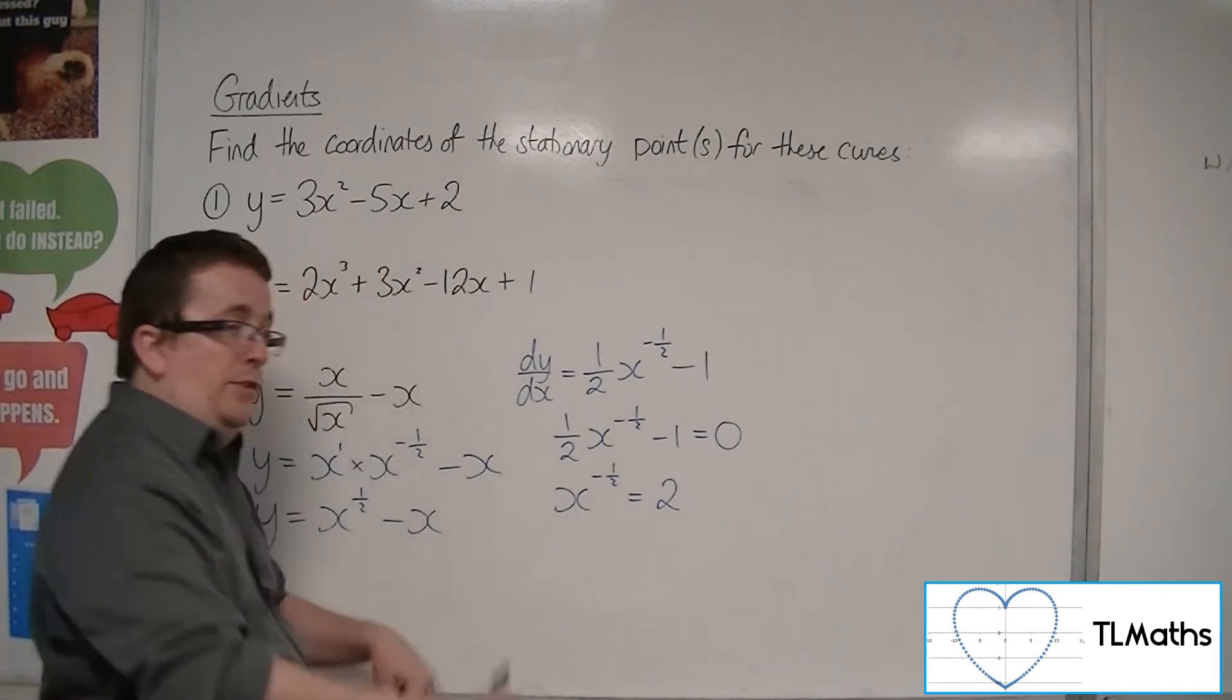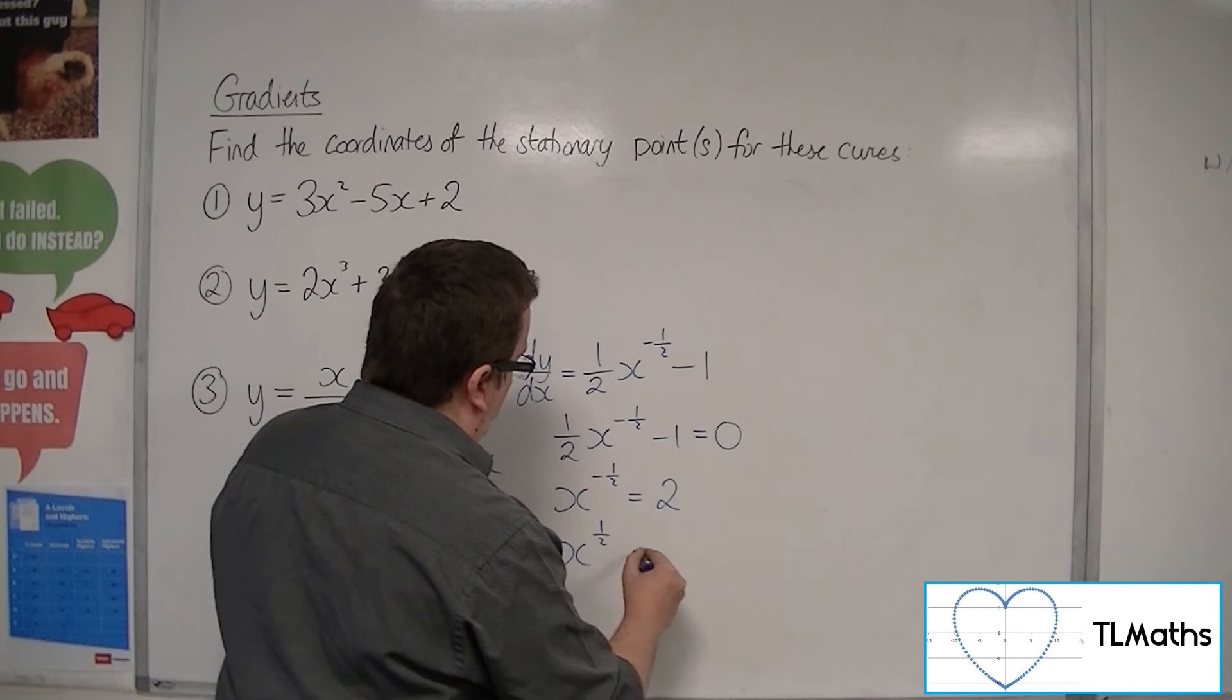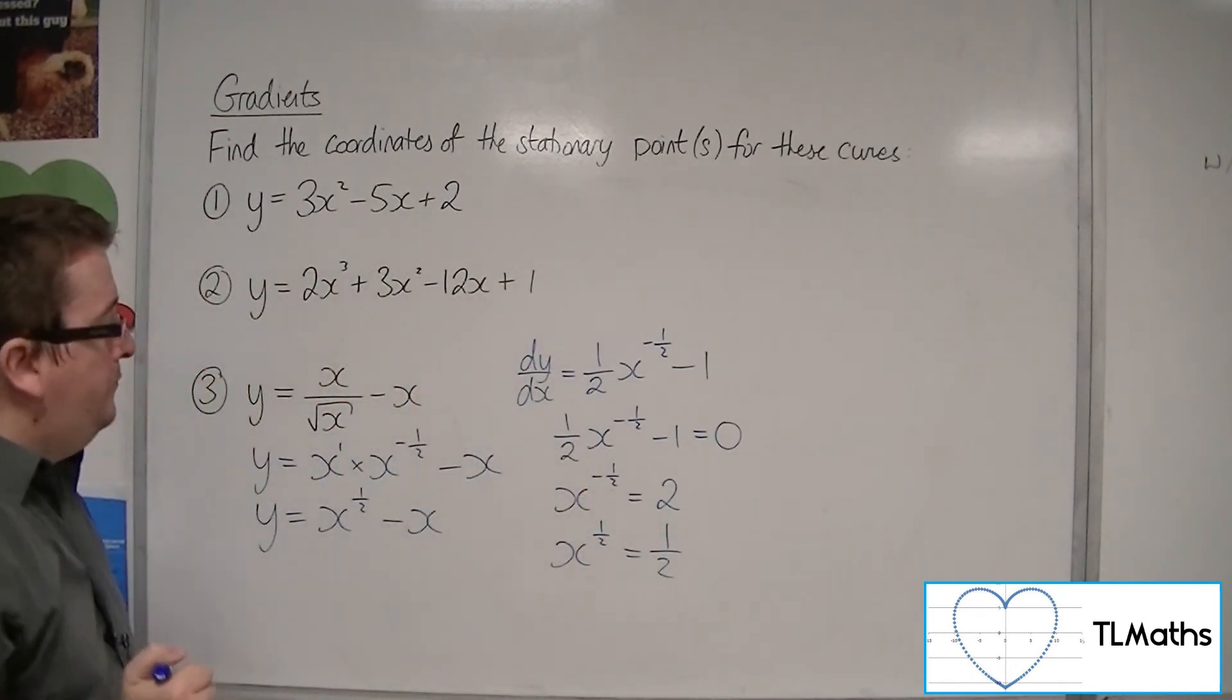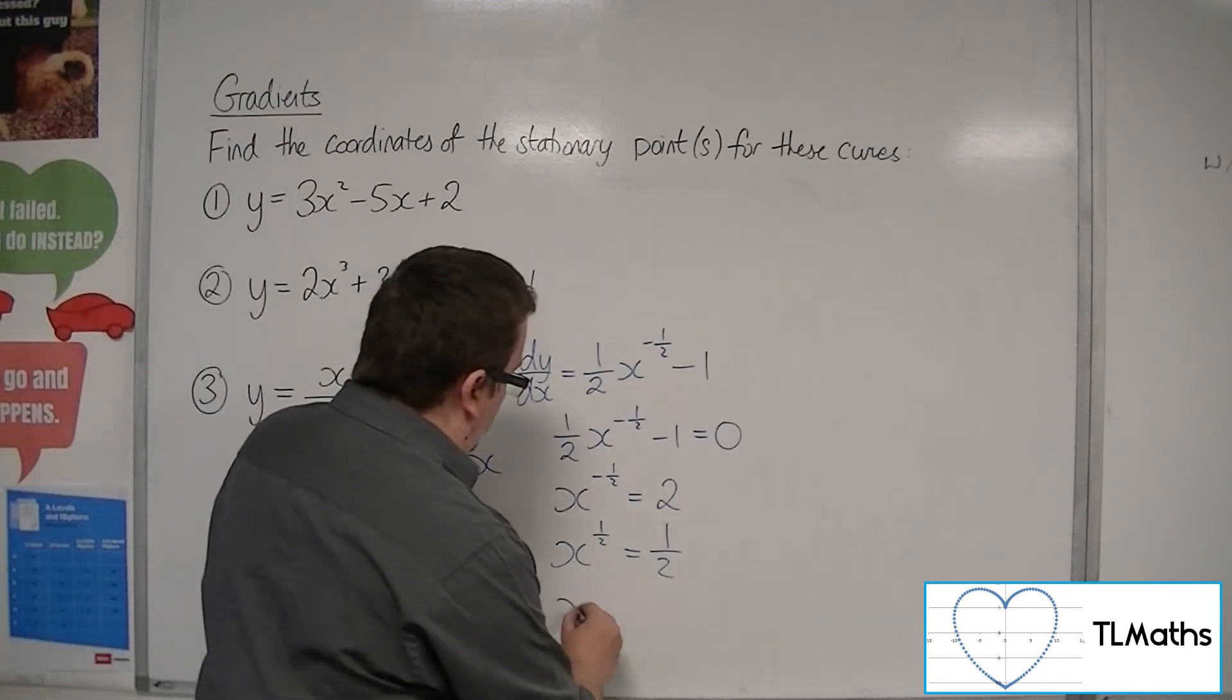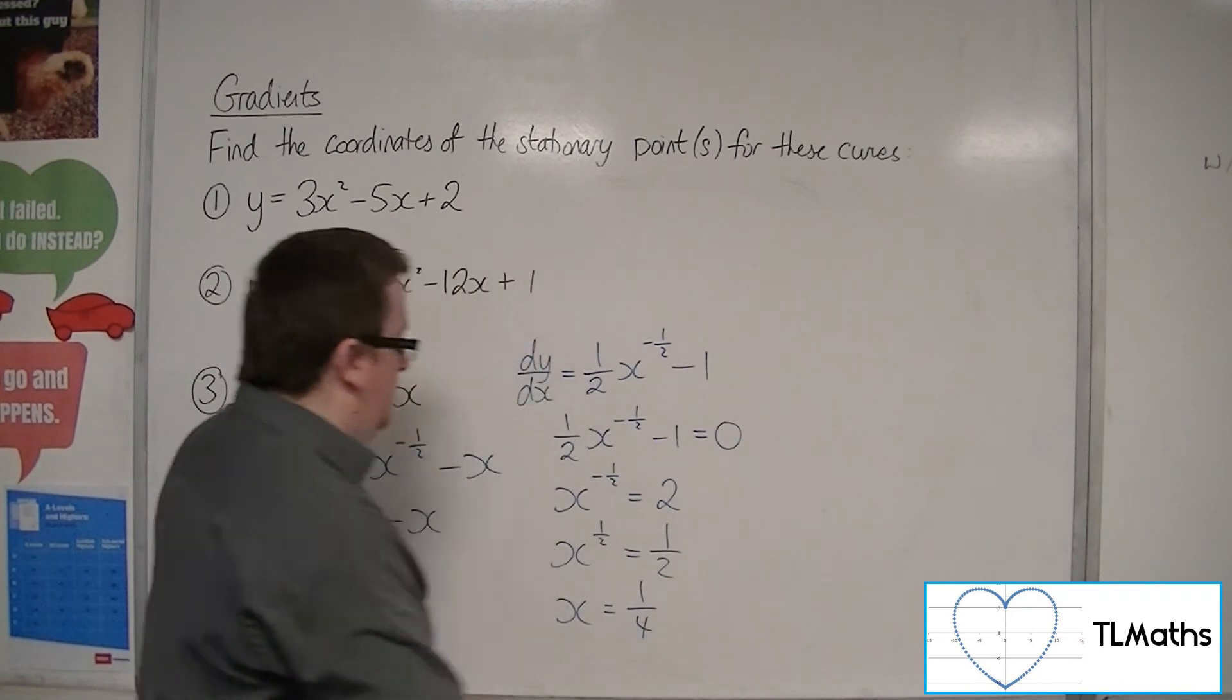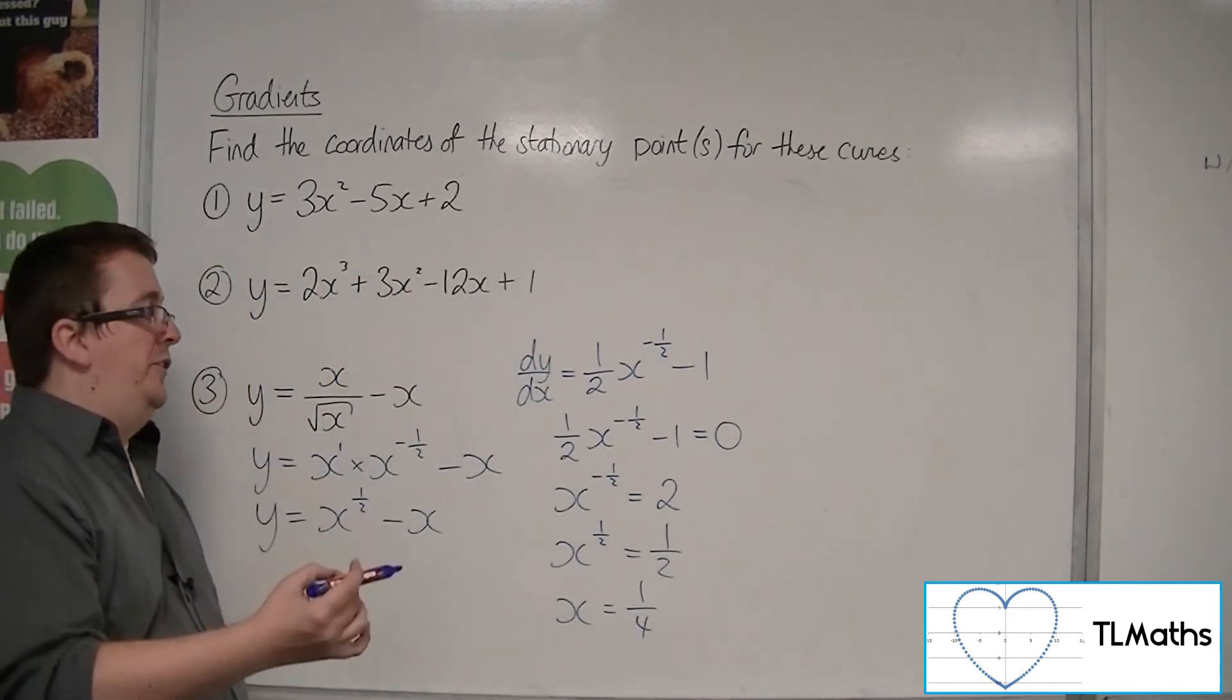If I use the reciprocal of both sides, that means that x to the half will be equal to 1 half. I could then square both sides, and so x must be equal to 1 quarter. So that is the x coordinate of the stationary point.